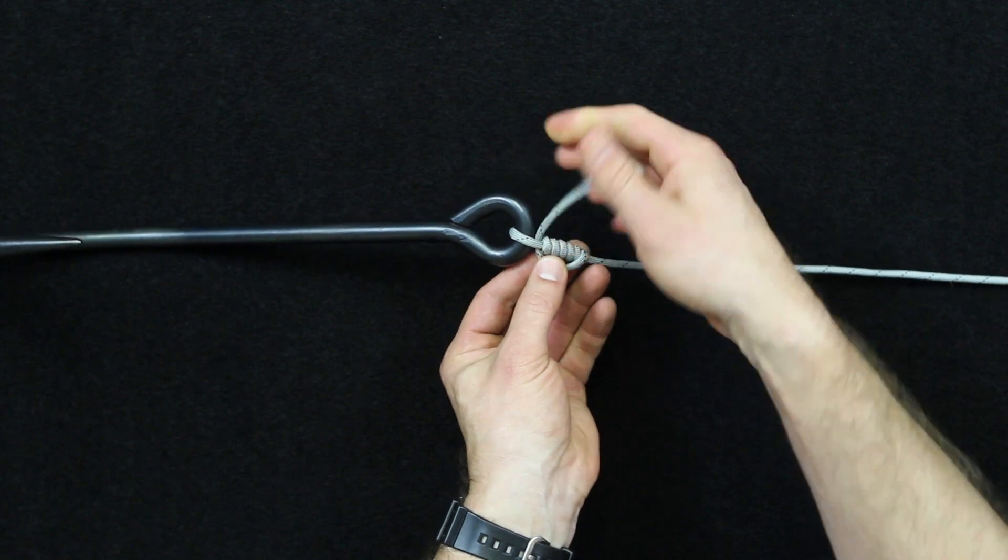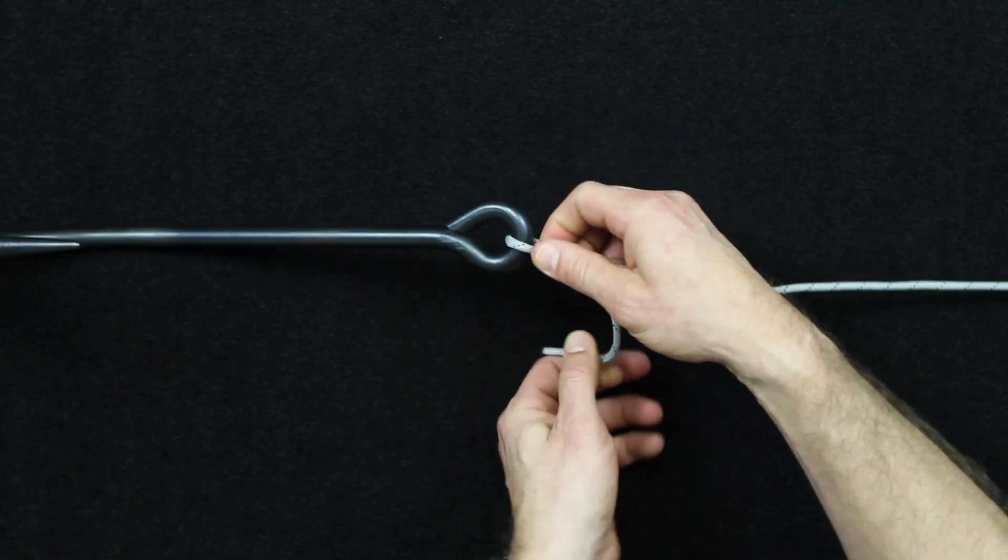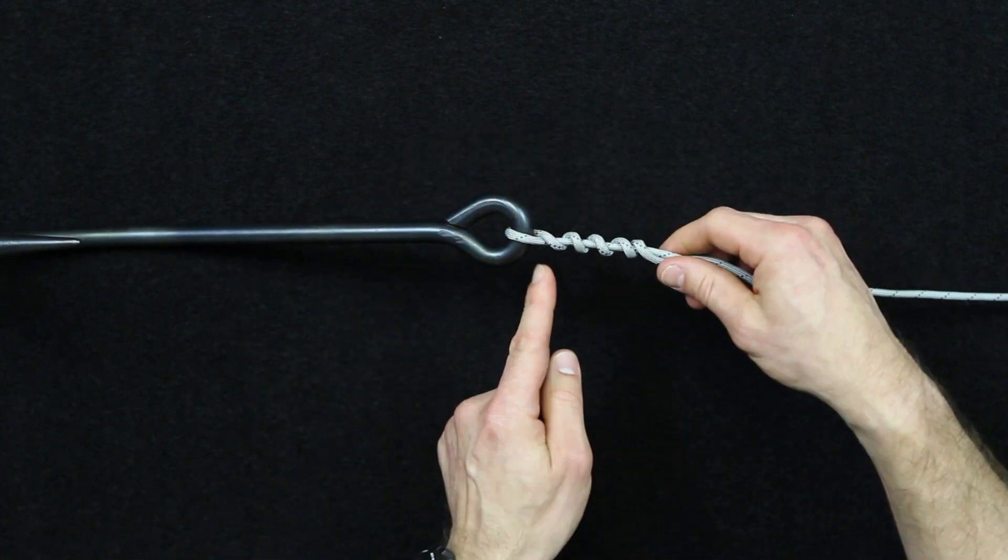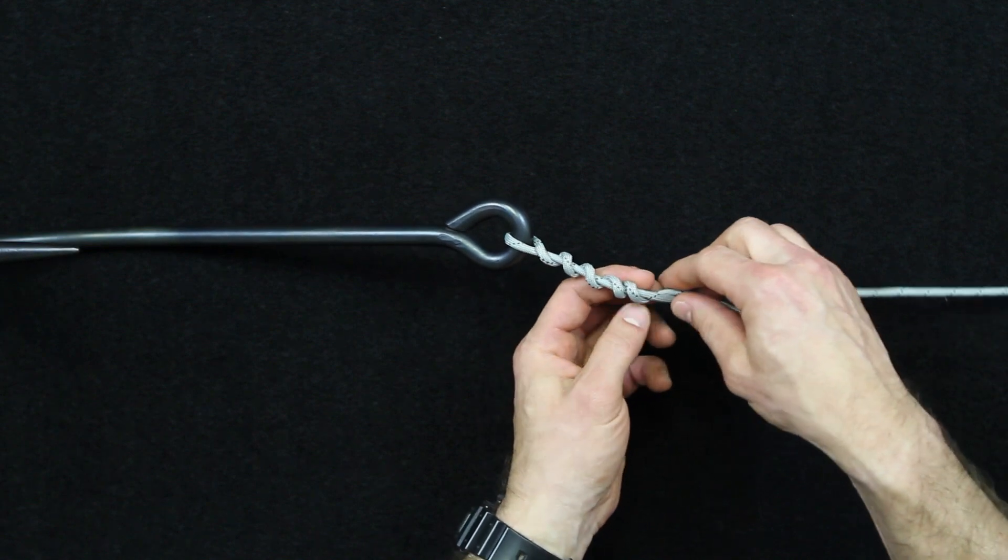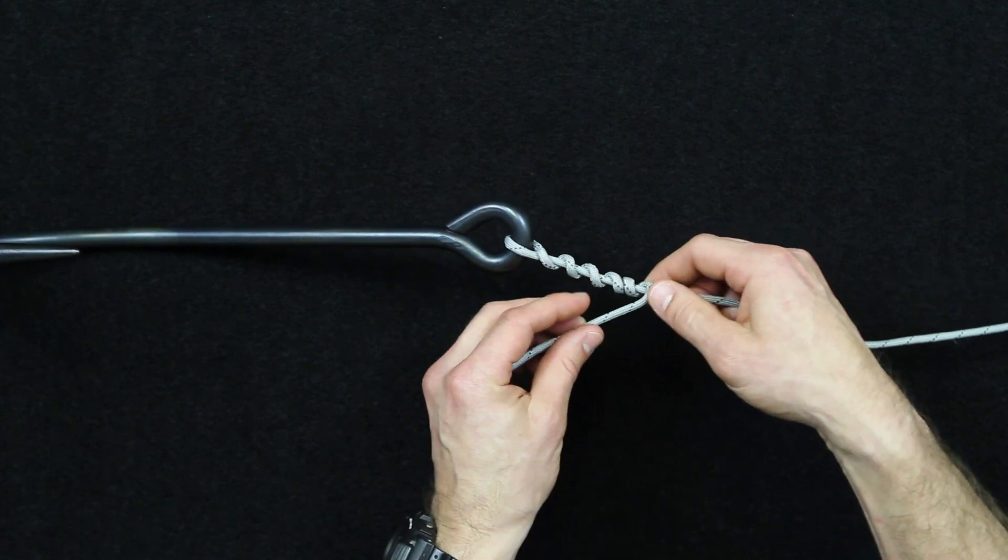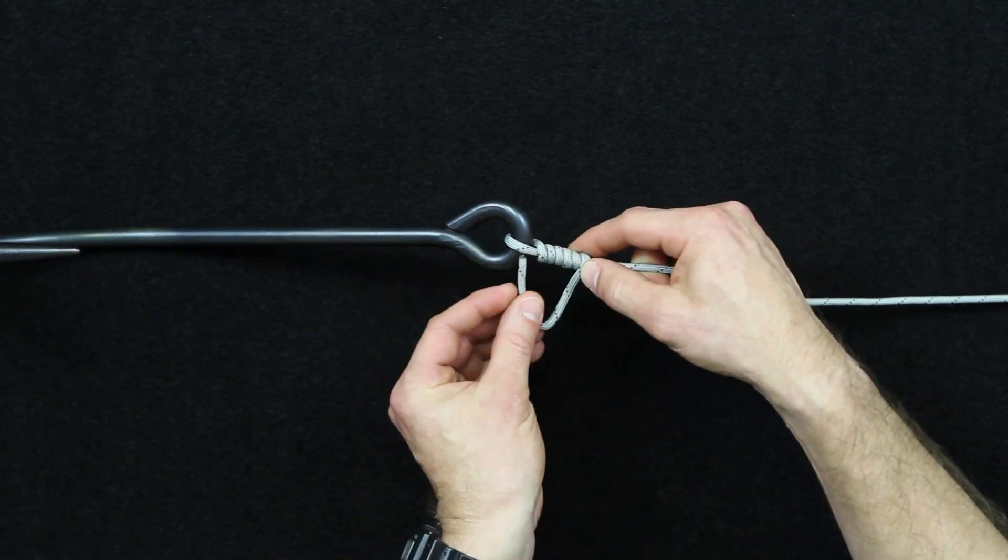Now we'll do the last step one more time just because it might have been a little hard to see. So when you're pushing those wraps down you want to leave yourself a little bit of a gap there just to make sure you can get that line back in. So when you're tightening up you don't want to go all the way.